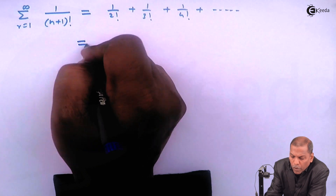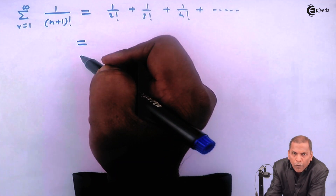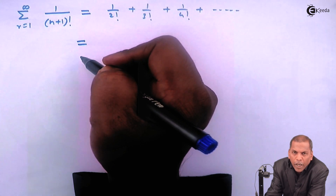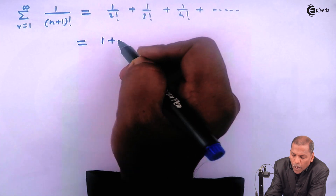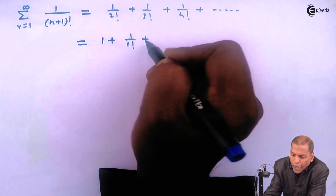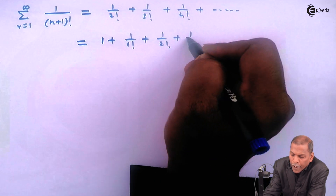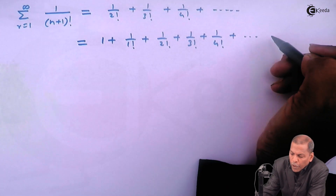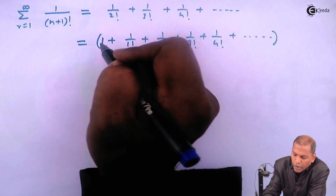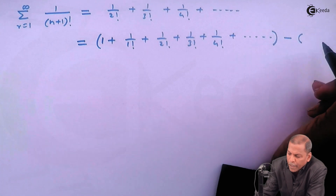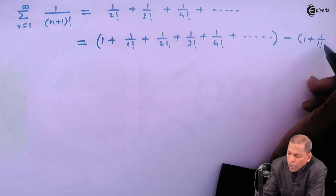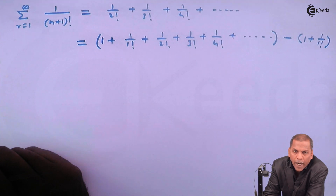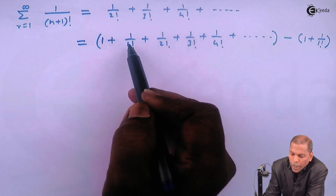Now here we are adding two terms and at the same time subtracting two terms — that is, one and one upon one factorial. So the expression becomes: one plus one upon one factorial plus one upon two factorial plus one upon three factorial plus one upon four factorial, and so on, in one bracket, minus a second bracket containing one plus one upon one factorial.